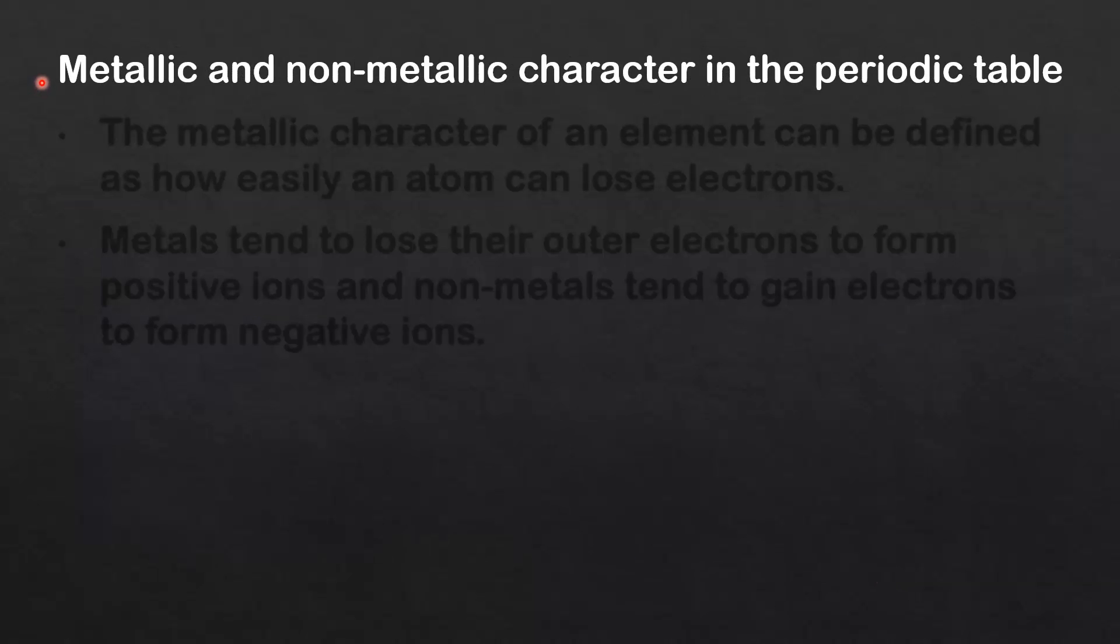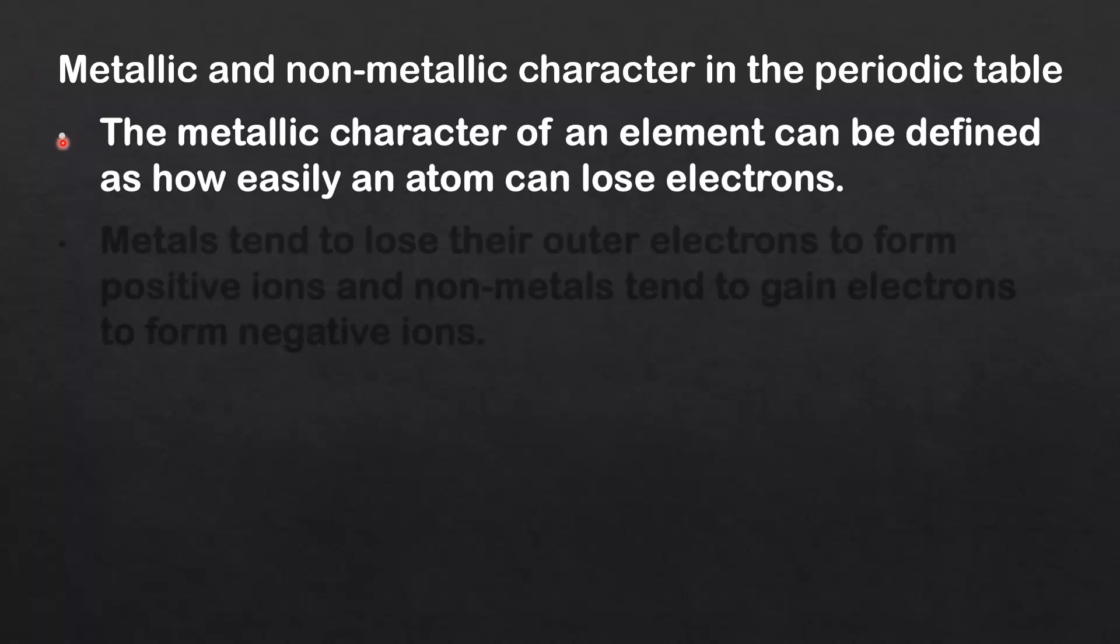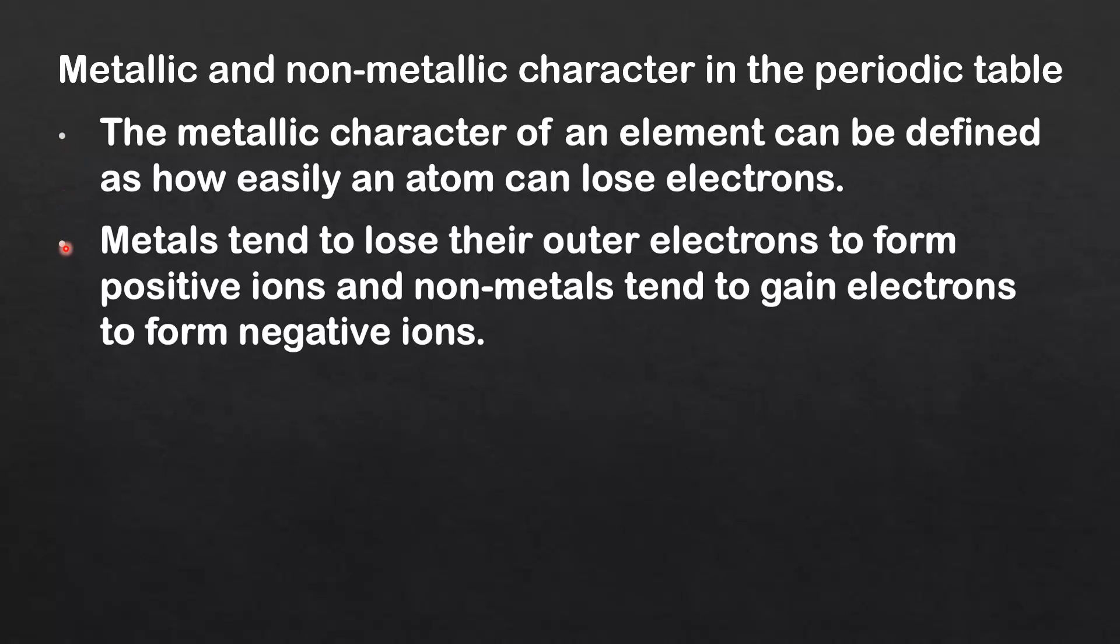Next we look at metallic and non-metallic character in the periodic table. The metallic character of an element can be defined as how easily an atom can lose electrons. Metals tend to lose their outer electrons to form positive ions, and non-metals tend to gain electrons to form negative ions.